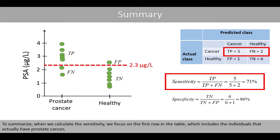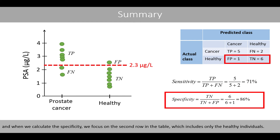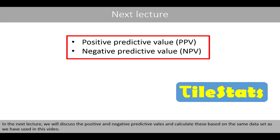To summarize, when we calculate the sensitivity, we focus on the first row in the table, which includes the individuals that actually have prostate cancer. And when we calculate the specificity, we focus on the second row in the table, which includes only the healthy individuals. In the next lecture, we'll discuss the positive and negative predictive values and calculate these based on the same dataset used in this video.